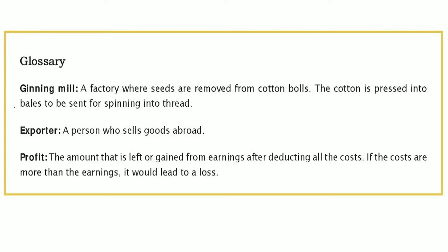Some key terms: a ginning mill is the factory where seeds are removed from cotton balls and the cotton is pressed into bales to be sent for spinning into thread. An exporter is a person who sells goods abroad, in foreign lands. Profit is the amount gained from earnings after deducting all the costs — if costs are more than earnings, it would be a loss. So here we tried to understand the chain: how cotton is produced and how it is sold in the market as a shirt, who is in between, and who is getting more or less money.